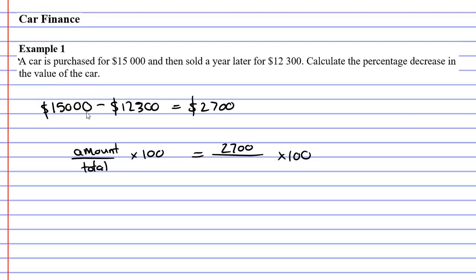Now the question says calculate the percentage decrease in the value of the car. And what you've got to remember is, it started at $15,000 and then it decreased by $2,700. So because the $15,000 is where it started before it decreased, that's going to be your total at the bottom.